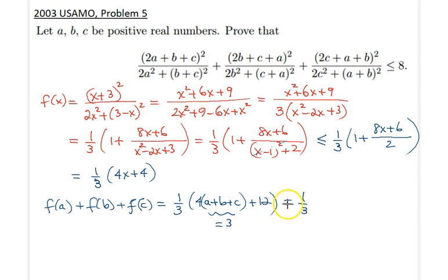So therefore we will get one-third times (4 times 3 is 12, 12 plus 12 is 24). So wow, that actually did the trick. We wanted to show that this sum here is less than or equal to 8.